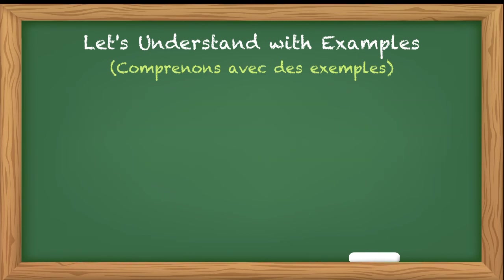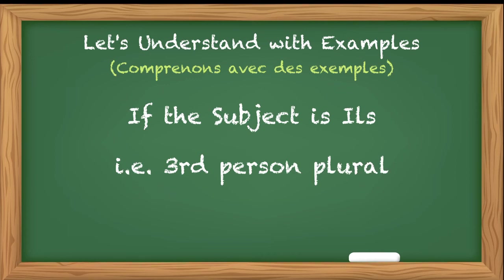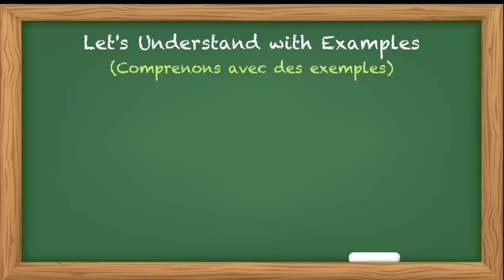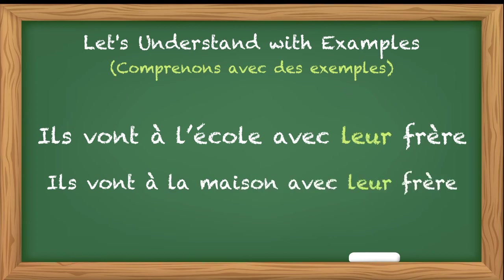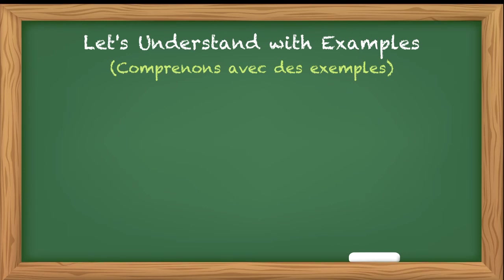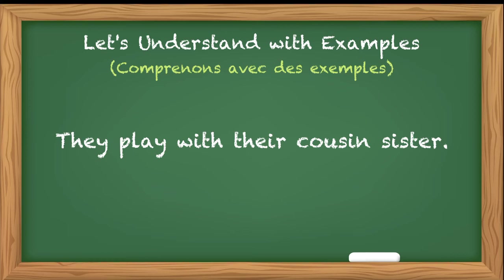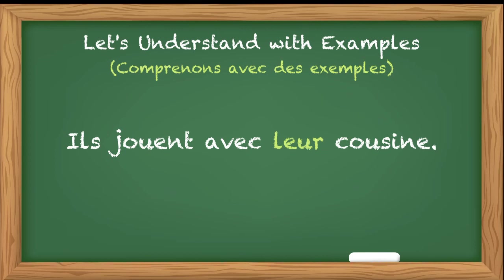If the possessor is ils — third person plural — and we want to say 'they go to school with their brother,' the sentence will be: 'Ils vont à la maison avec leur frère' — because frère is masculine singular, so leur. Let's try one more: 'They play with their cousin sister.' Cousin sister is feminine singular, and they means ils, so the possessive adjective will be leur — LEUR. 'Ils jouent avec leur cousine.'